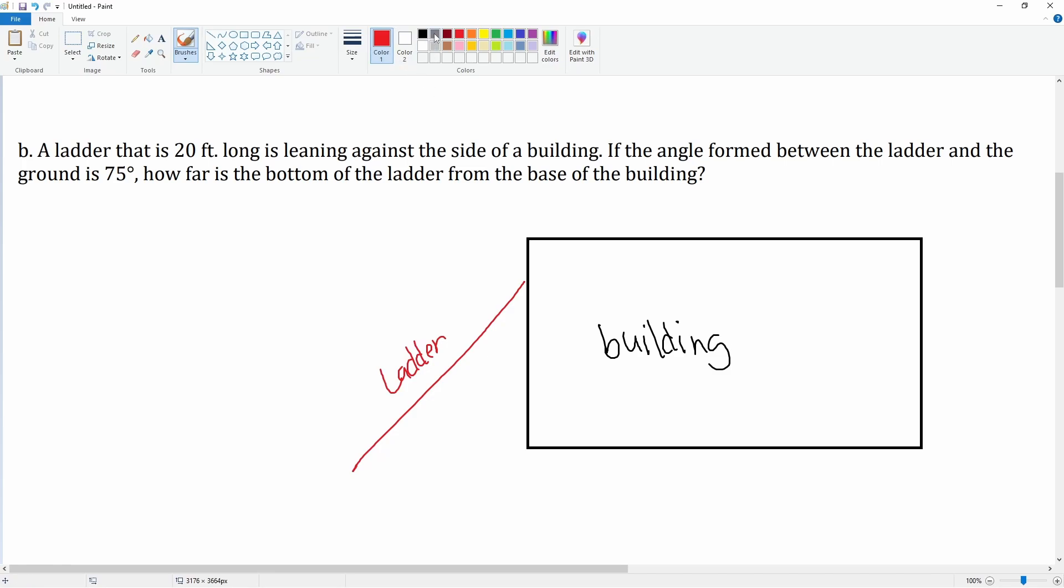Okay, and there is the floor which is right here. And we know that the ladder is 20 feet, so this is 20 feet. And then from the ground it is 75 degrees, so this is 75 degrees. And they say how far is the bottom of the ladder to the base. So we're looking for this x here.